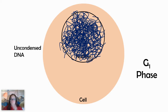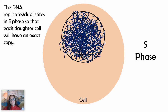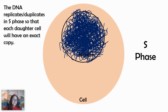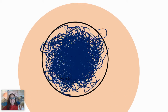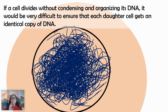As we saw in the previous video on interphase, in G1 the cell is living its life, then it goes into S-phase where the DNA duplicates and we have twice as much DNA. If we were to divide this cell at that point without organizing the DNA, it would be very difficult to make sure that we get two identical daughter cells.